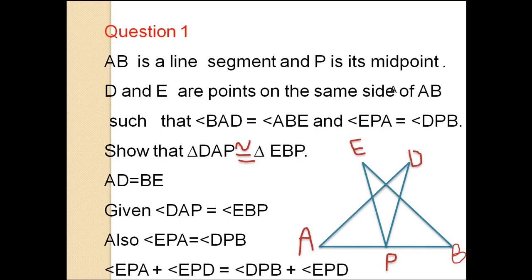D and E are points on the same side of AB such that angle BAD equals angle ABE and angle EPA equals angle DPB. Show that triangle DAP is congruent to triangle EBP.